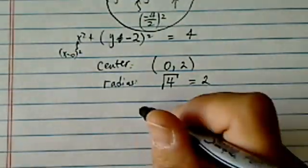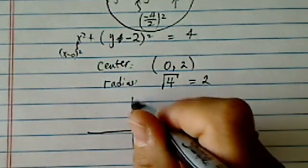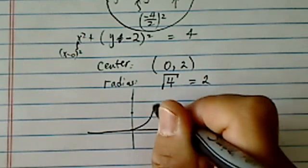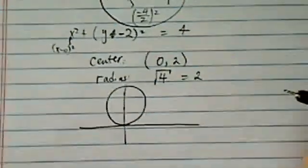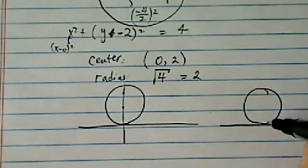So you graph this one in a Cartesian coordinate. We have two units there and here's our circle, which kind of makes sense if you think about it.